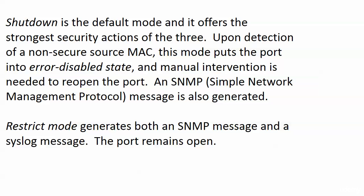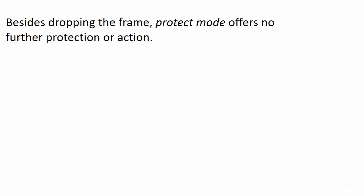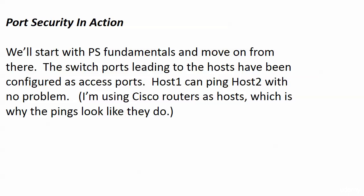With shutdown mode, manual intervention is needed to reopen the port — we as the network admin have to connect to that switch, shut the port down, reopen it, and reset it. An SNMP message is also generated. Restrict mode generates both an SNMP message and a syslog message, and the port remains open. Protect mode, besides dropping the frame, doesn't give us anything else. So be very clear on the differences — they all sound good, but protect, restrict, and shutdown have some very important differences.